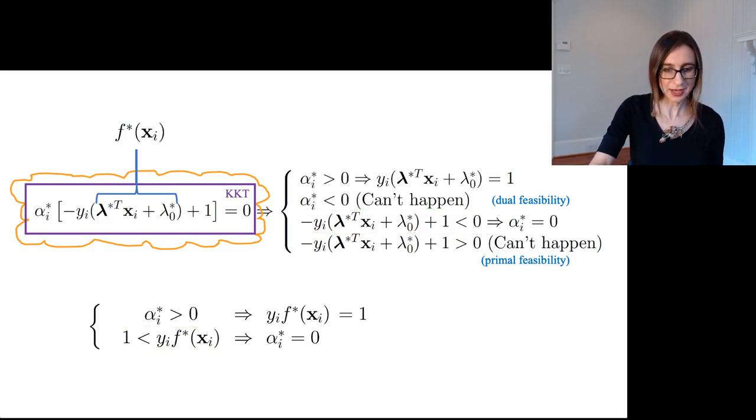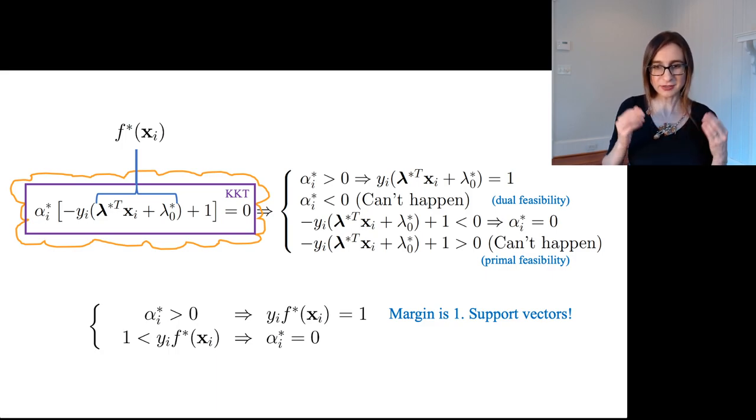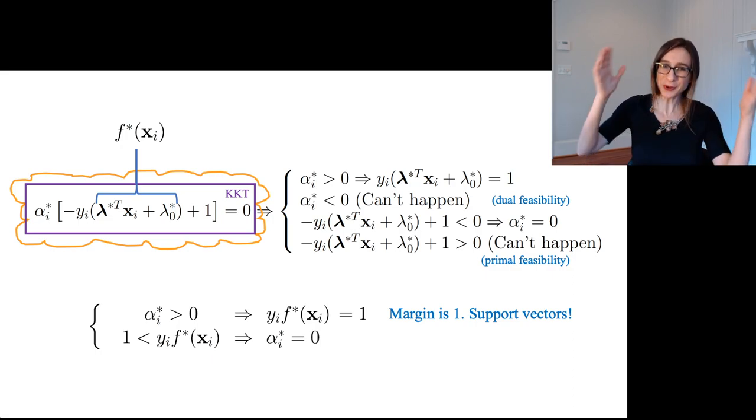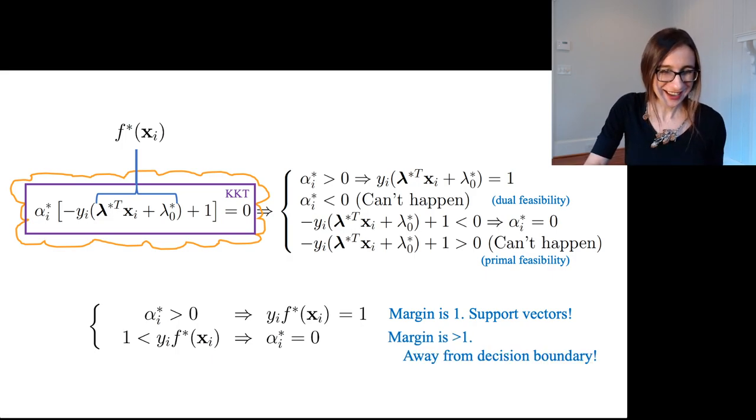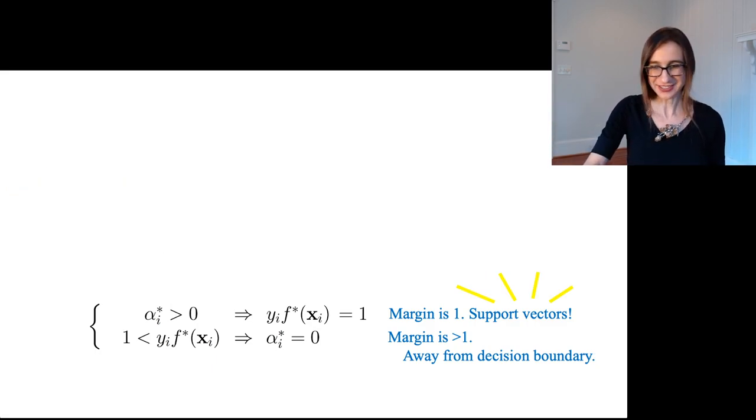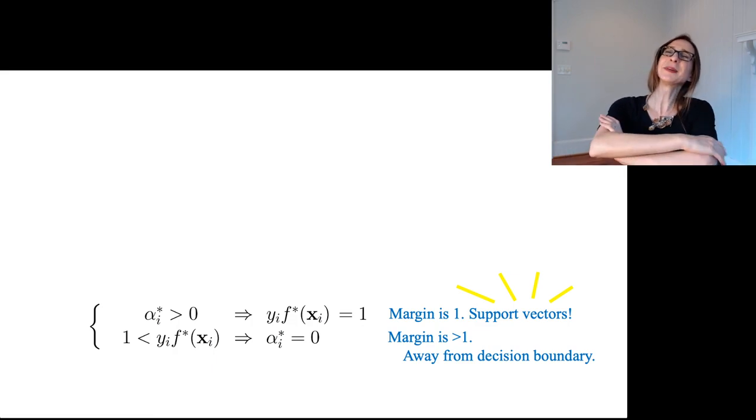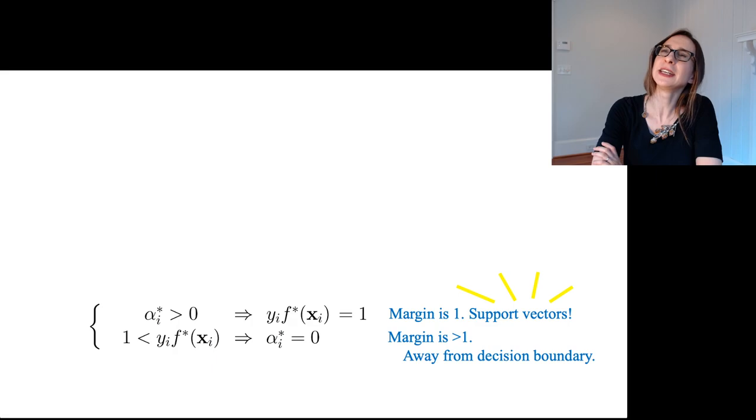Now the first case, the data points where this actually holds, those are called support vectors. That's where the name comes from. That's where the whole technique, that's the whole idea of the technique. It comes from this, the name of this thing. And then if the margin is greater than one, that means these points are far away from the decision boundary and they don't matter. This is where the name comes from. I think, to be honest, that the coolness of that name is why I went into the whole field of machine learning.